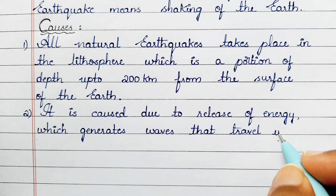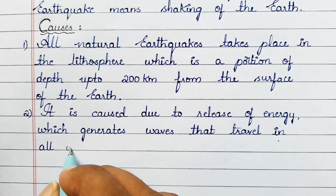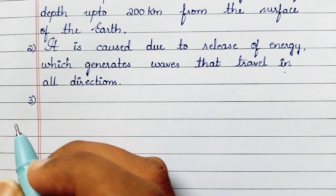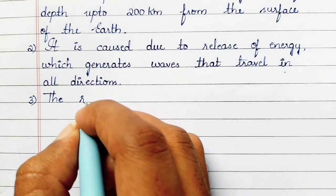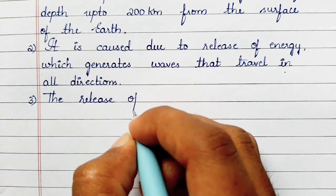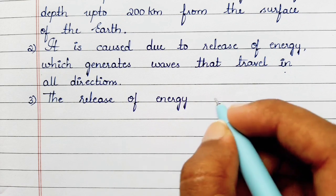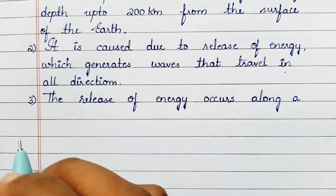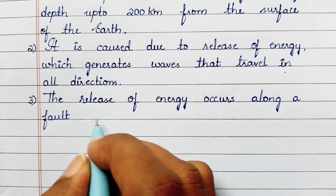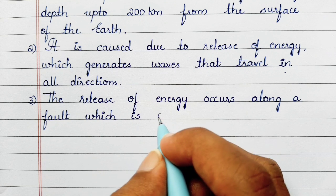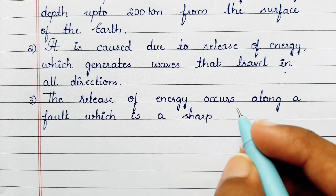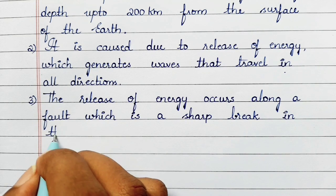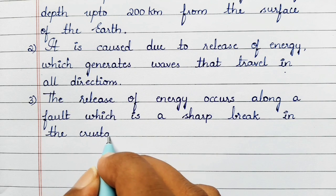This is caused due to the release of energy which generates waves that travel in all directions, and these waves are called seismic waves. Seismic waves are of two types: P waves and S waves. The release of energy occurs along the fold, which is a sharp break in crustal rocks.